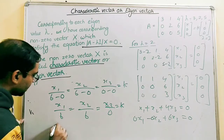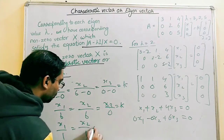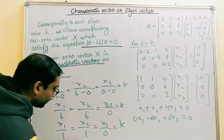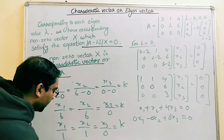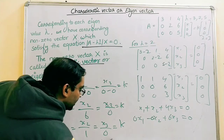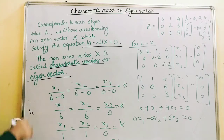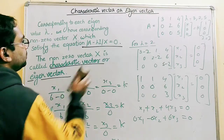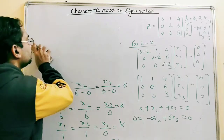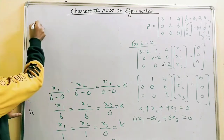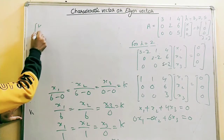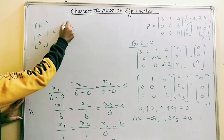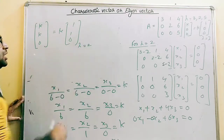Dividing through by 6 gives X1/1 = X2/1 = X3/0 = K, so X1 = K, X2 = K, X3 = 0. Writing this as a vector, keeping K out, the eigenvector for lambda equals 2 is [1, 1, 0].